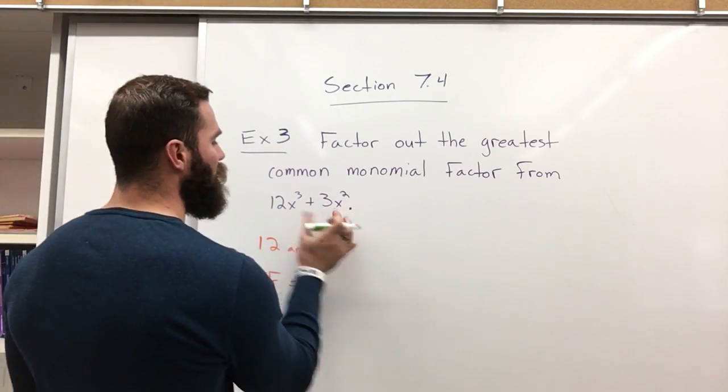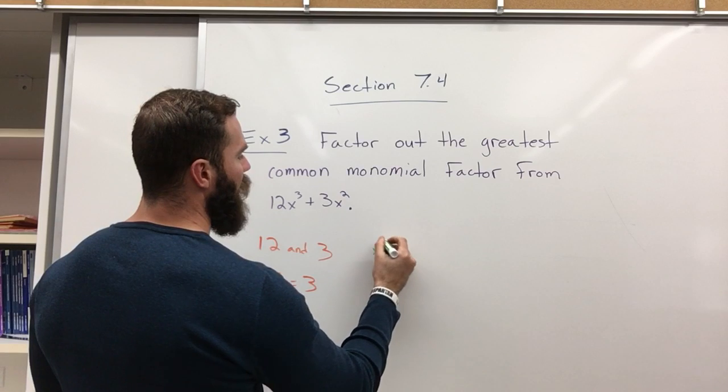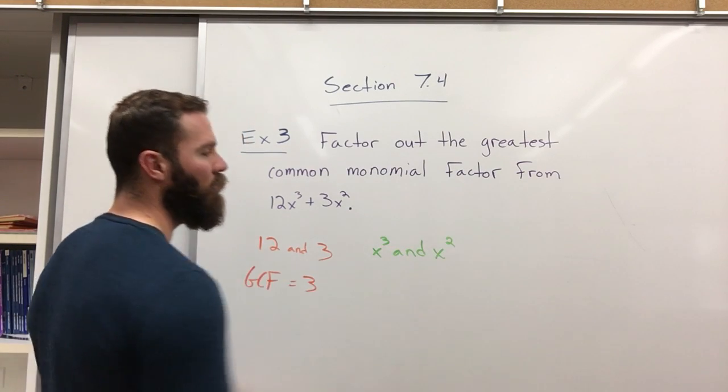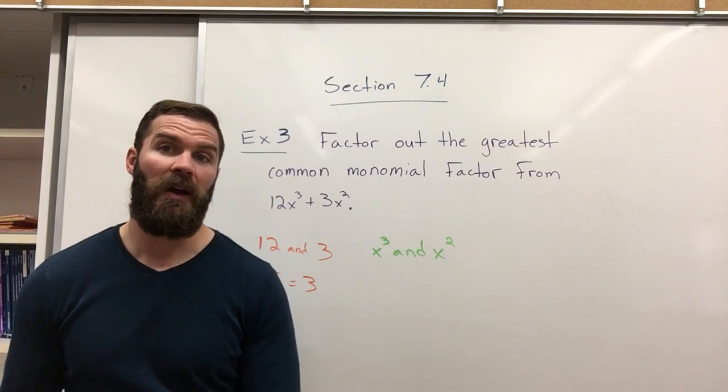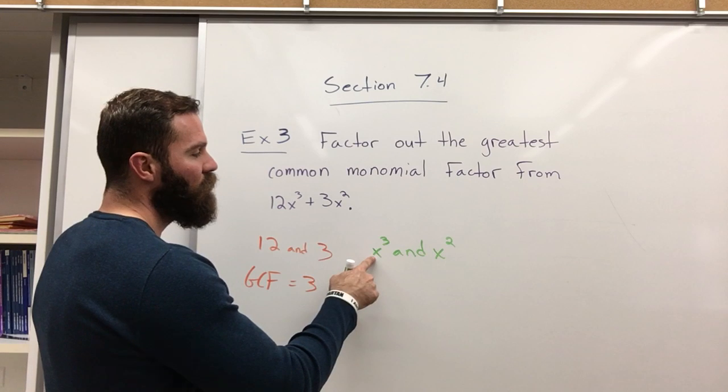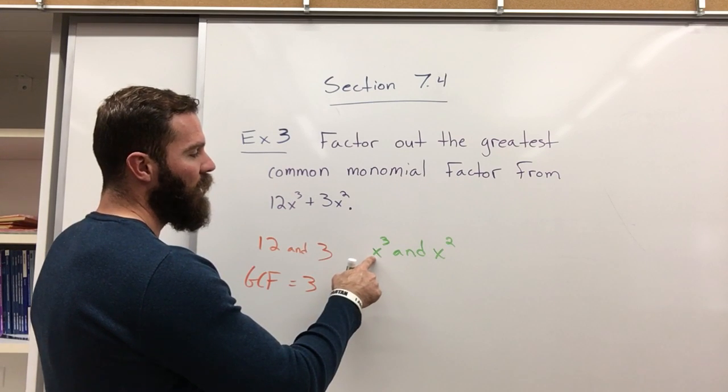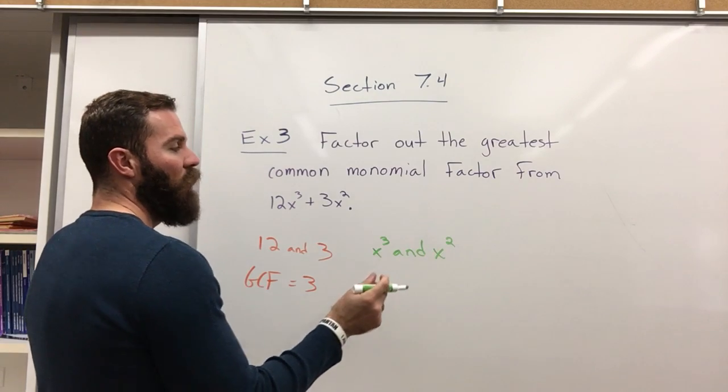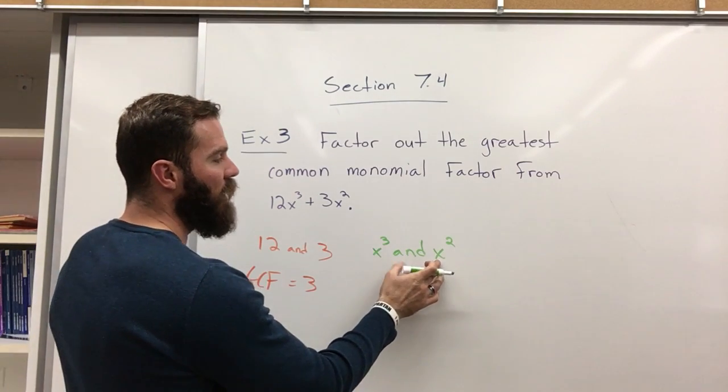Now, what about the x's? We have an x cubed, and we have an x to the second power. What's the greatest common factor of those? Well, x goes into x cubed three times, and x goes into x squared twice, so the largest would be the x squared.